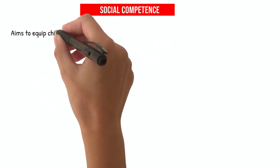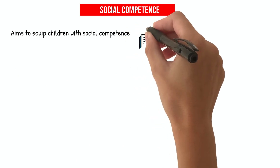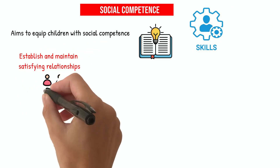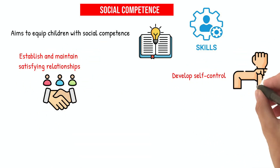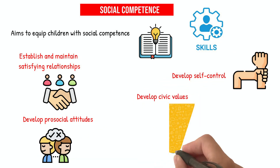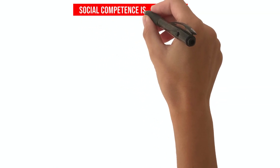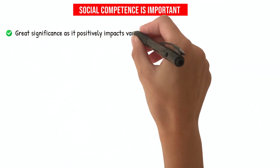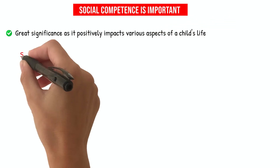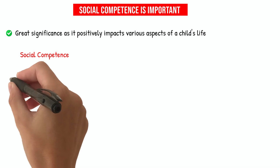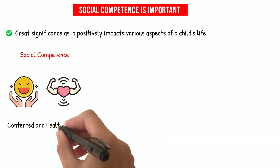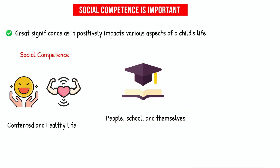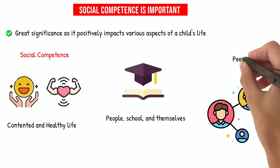The social domain aims to equip children with social competence, which encompasses the knowledge and skills required to achieve the following objectives: establish and maintain satisfying relationships, develop self-control, develop pro-social attitudes, and develop civic values. Having social competence holds great significance as it positively impacts various aspects of a child's life. Research suggests that children who possess social competence tend to lead a more contented and healthy life, perform better academically, hold positive attitudes towards people, school, and themselves, and have more positive interactions with their peers and adults.